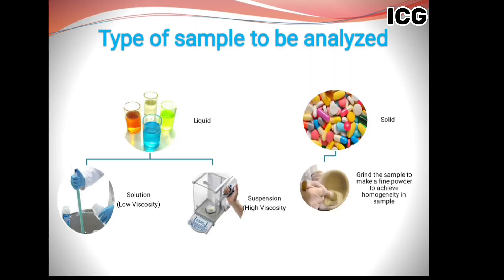If we talk about sample types received in the lab for analysis, they can be of two types: solid form or liquid. For solid samples, the main precaution is to take a sufficient quantity of the powder, grind it in a pestle and mortar, and after grinding your sample must be completely homogenized. The accuracy of results for the active tablet API depends directly on homogeneity — if your sample is well ground and homogenized, you will get good results.